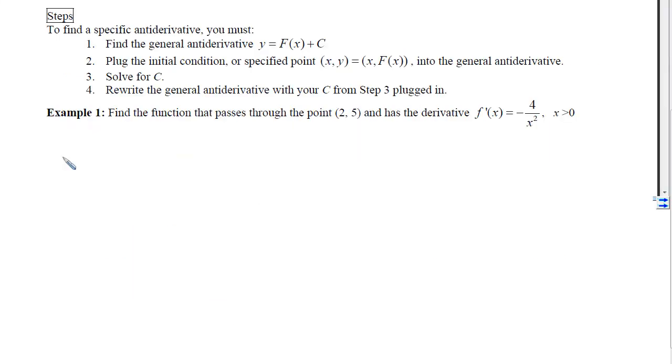With example 1, we are going to do step 1 first, which is to find the general antiderivative. So we have f'(x) = -4x^(-2). In order to get the general antiderivative, we need to ask, what did I take the derivative of that gave me f prime? Well, that answer would just be f(x).